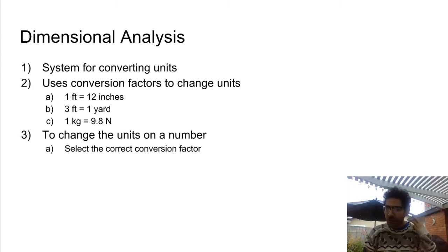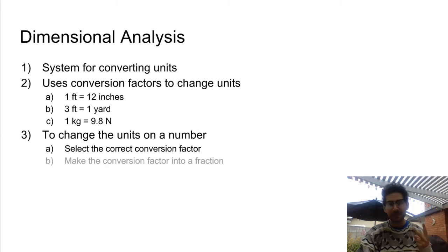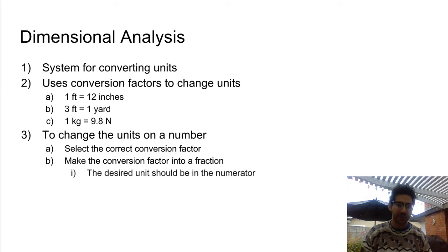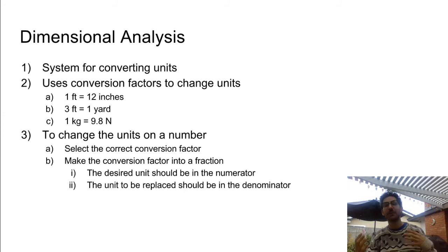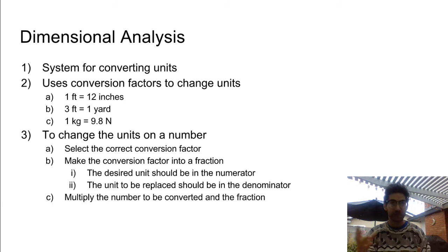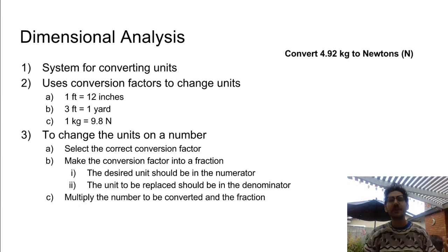If we want to change the units on a number, we've got a three-step process. First, figure out the correct conversion factor. Second, make that conversion factor into a fraction — the unit you desire should be on top in the numerator, and the unit you want to replace goes in the denominator. Third, multiply your original number by this fraction.